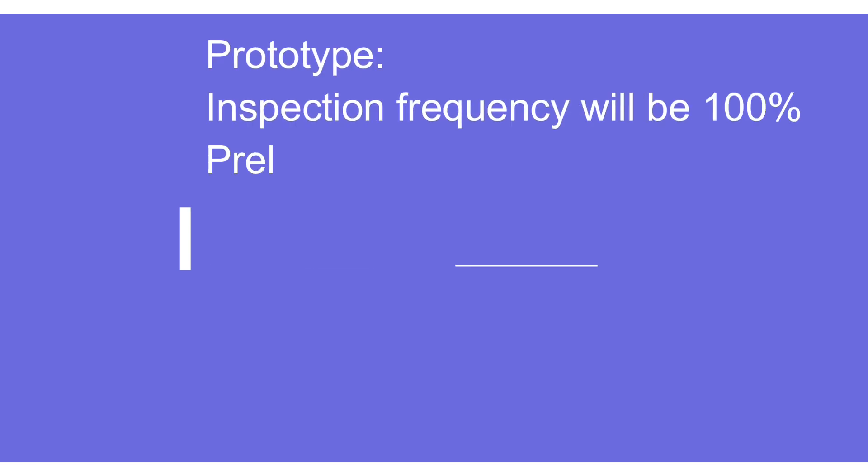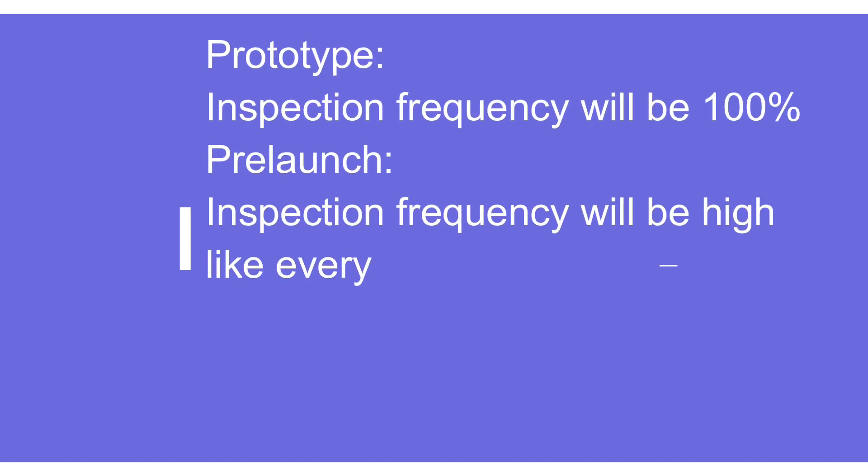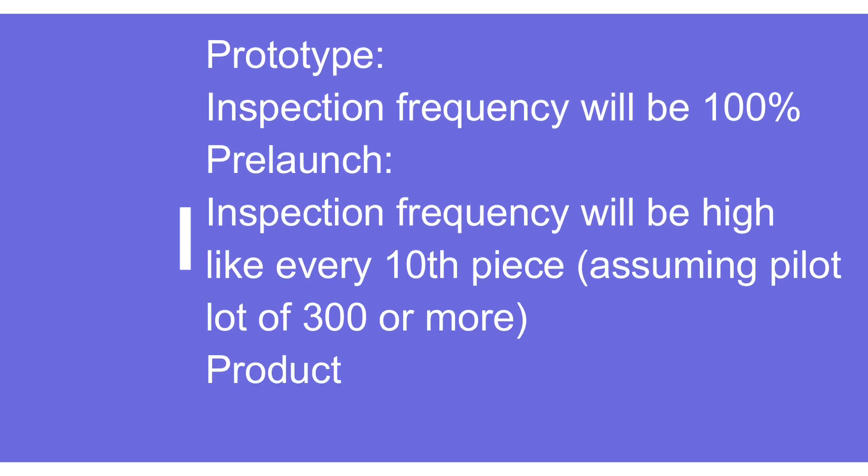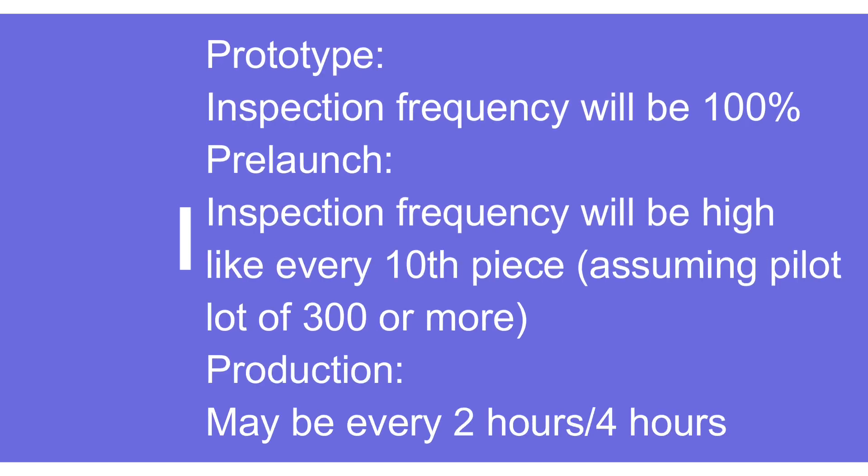In the prototype control plan, the inspection frequency is 100% because we are making only 2 to 5 pieces. In the pre-launch control plan, the inspection frequency will be a little bit higher. But in mass production, it will be as per the agreement with the customer.